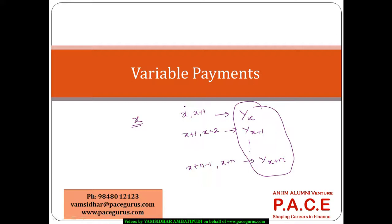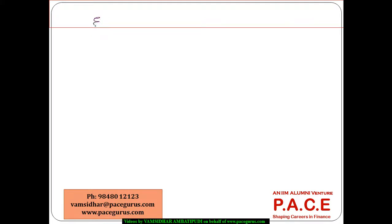This is a real possibility in various policies. Let's visualize this situation where the benefit is paid at the end of the year of death. If a person dies in the first year, y_x is paid at the end of year one. The present value is the discount factor v multiplied by the probability that the person dies in the next one year, which is q_x.